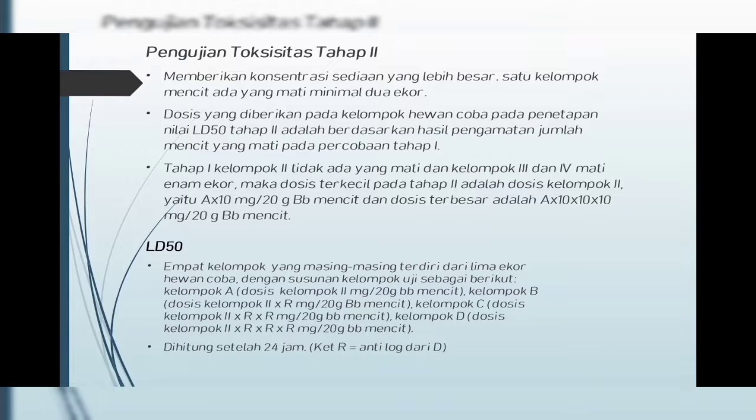Uji LD50 dengan empat kelompok masing-masing lima ekor hewan coba. Kelompok A: dosis kelompok 2 mg/20g; Kelompok B: dosis kelompok 2×R mg/20g; Kelompok C: dosis kelompok 2×2R mg/20g; Kelompok D: dosis kelompok 2×3R mg/20g berat badan mencit. Kemudian dihitung setelah 24 jam. R di sini menunjukkan anti-log dari D.